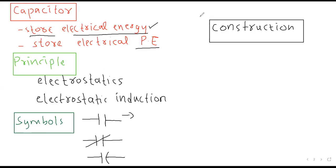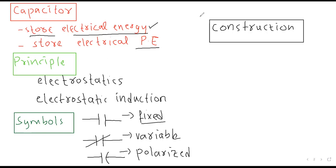جو پہلی symbol ہے اسے fixed capacitors کہتے ہیں، زیادہ تر rectifier circuits میں use ہوتی ہے۔ Variable capacitors کو radio tuning میں use کرتے ہیں۔ آخری symbol ہمارے پاس polarized capacitor ہے۔ اس fixed capacitor کو parallel plate capacitor بھی کہہ سکتے ہیں جو ہم آگے discuss بھی کریں گے۔